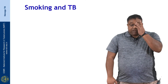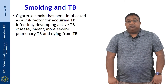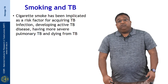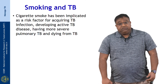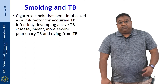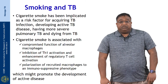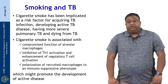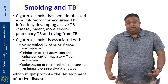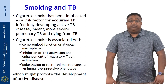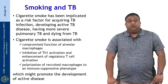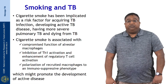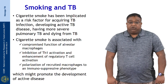Smoking is another important factor in TB reactivation. Cigarette smoke has been implicated as a risk factor for acquiring TB infection, for developing active TB disease, for having more severe pulmonary TB, and for dying from TB. Cigarette smoke is associated with compromised function of alveolar macrophages, inhibition of TH1 activation, enhancement of regulatory T cell activation, and polarization of recruited macrophages to an immunosuppressive phenotype — all of which promote development of active disease.